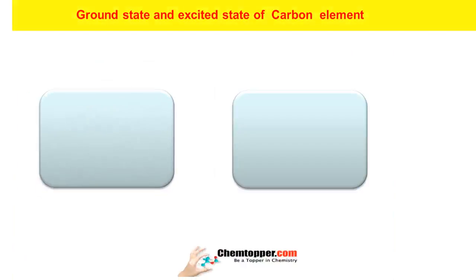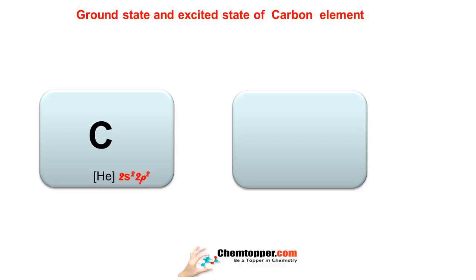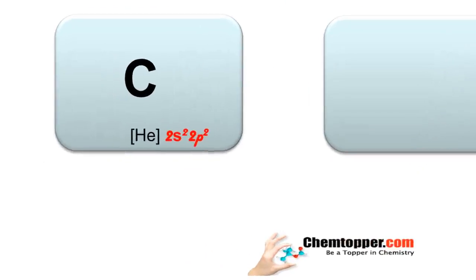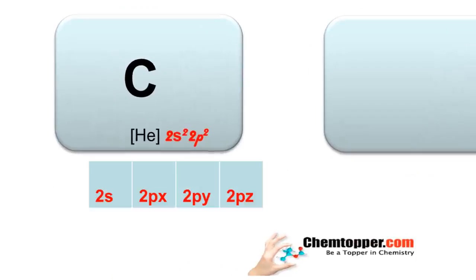The ground state and excited state of group 4A elements have different electronic configurations, so they have different Lewis dot symbols in their ground state and excited state. Let's understand this with the help of carbon. Carbon has 2 + 2 = four valence electrons in its outermost shell. Two electrons of the 2s orbital are present as a pair, and the remaining two electrons are in two different p orbitals as single or unpaired electrons.